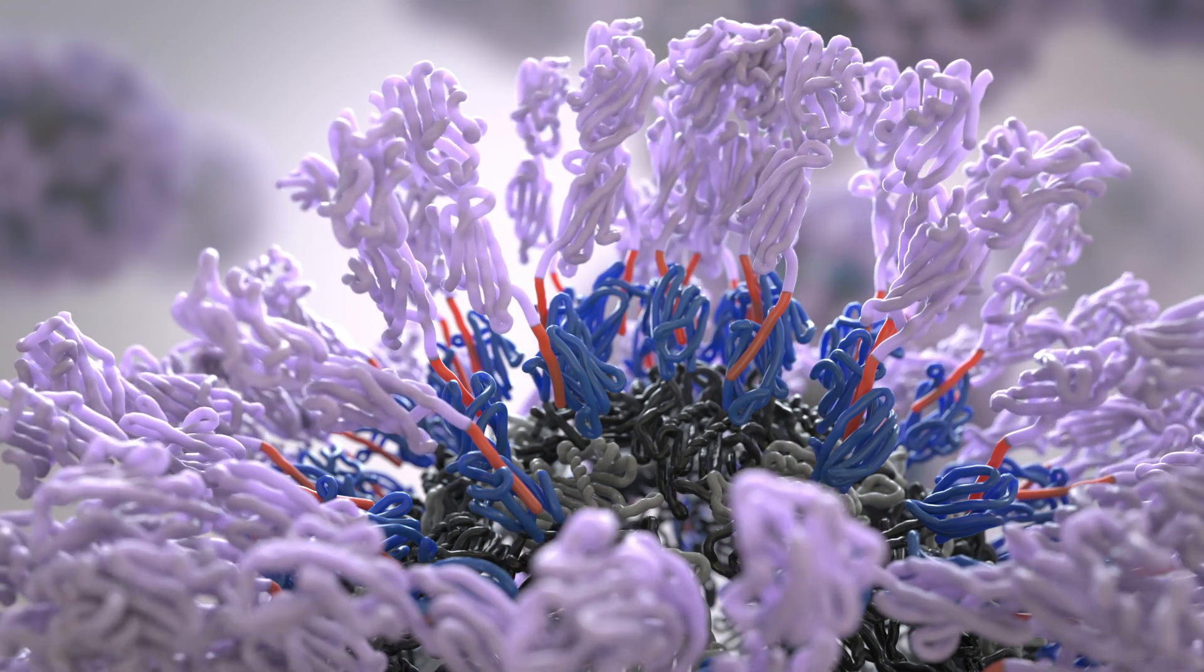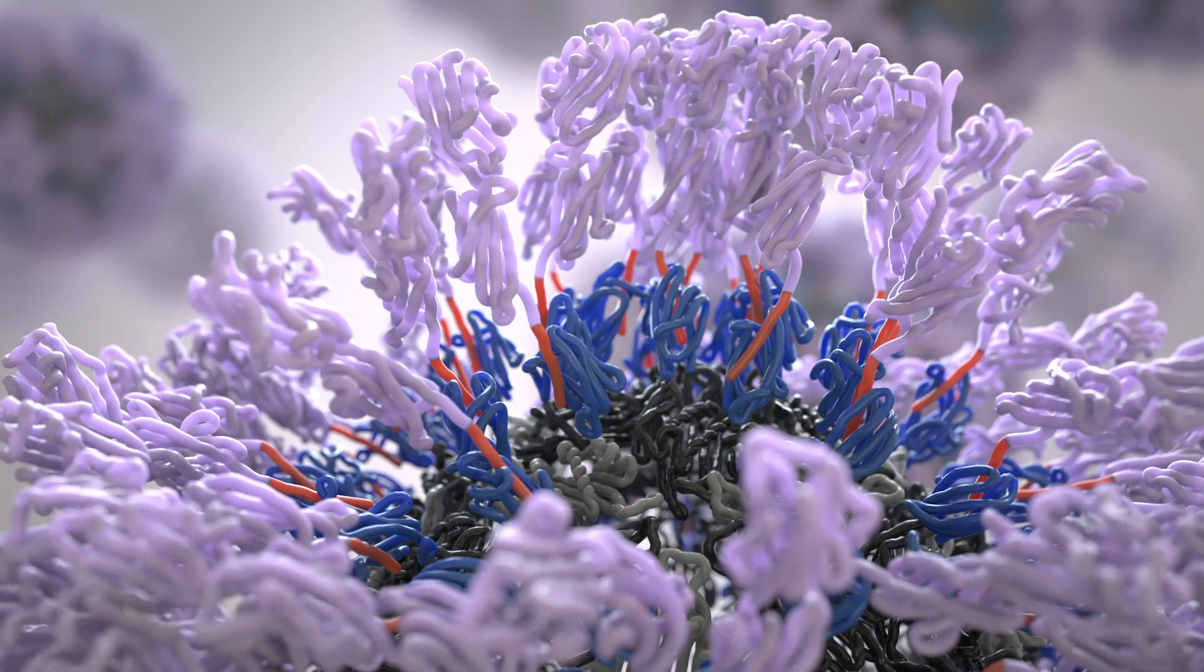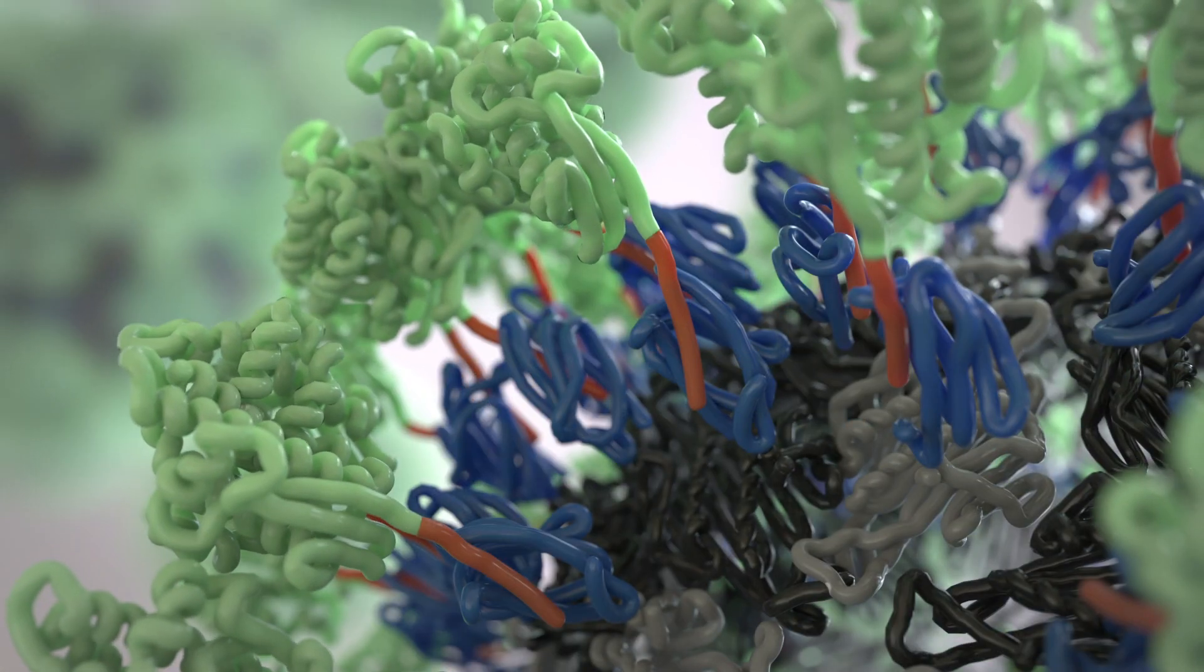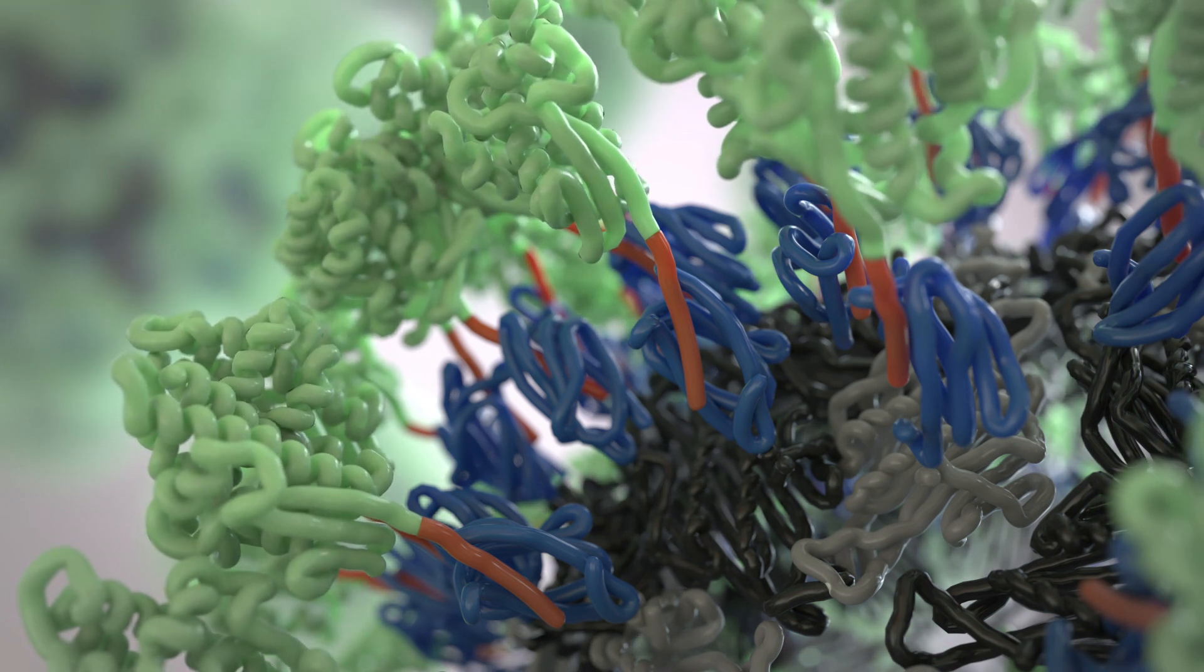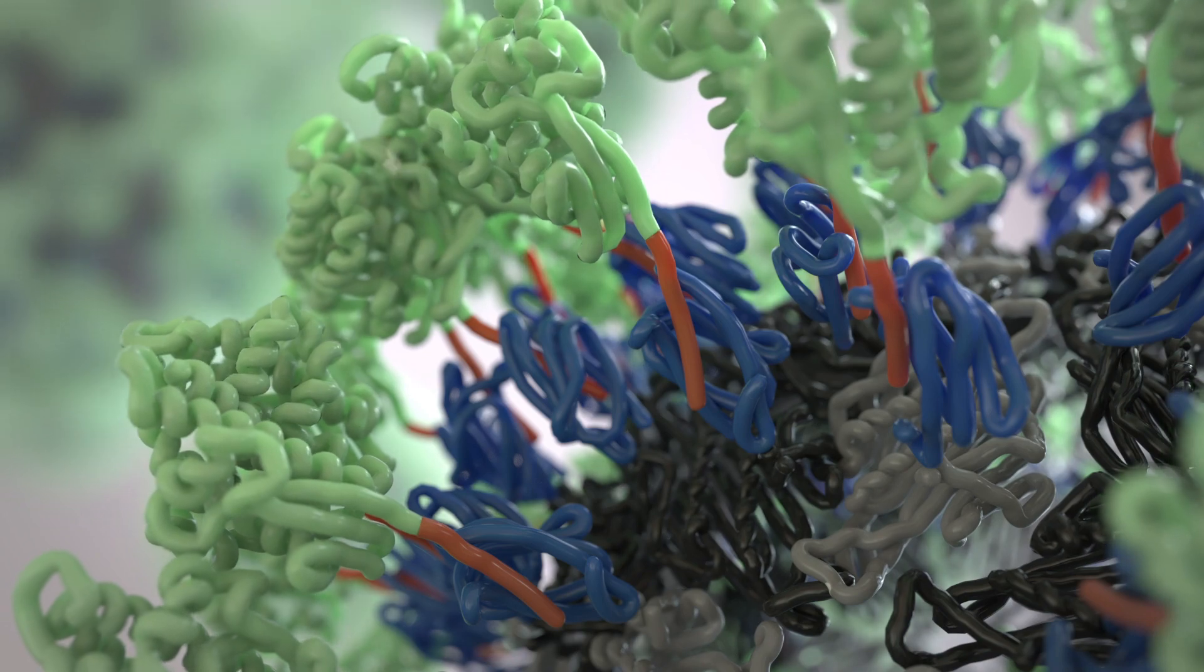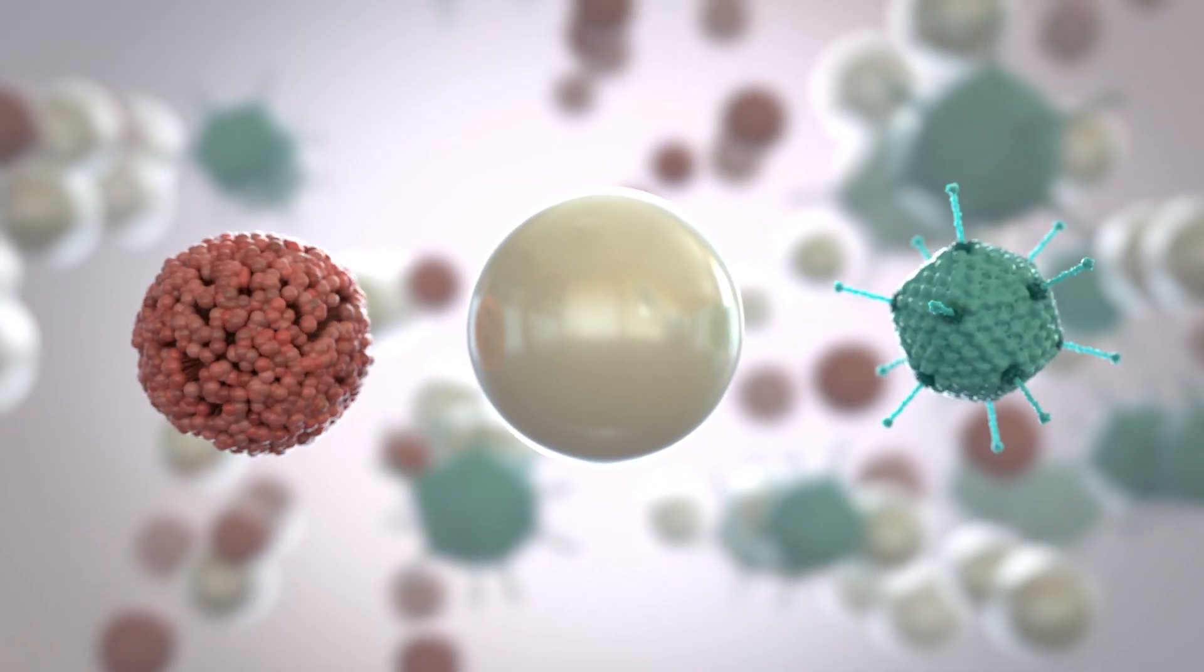The Spy Tag Spy Catcher system is easily modified to make new vaccine candidates. Identical Spy Catcher-coated virus-like particles can be used to create a range of vaccines, each with their own Spy Tag-bound antigen. Spy Tag is also highly effective in attaching antigens onto vaccine platforms other than virus-like particles.